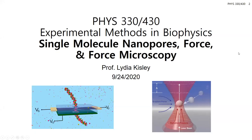Today we're going to be talking about other ways to measure individual molecules using different phenomena from fluorescence — using nanopores based on electrical currents, using magnetic fields, and using light to exert force on particles with optical traps. This is going to be the main thing we'll discuss at length, with a little bit about nanopores as well.